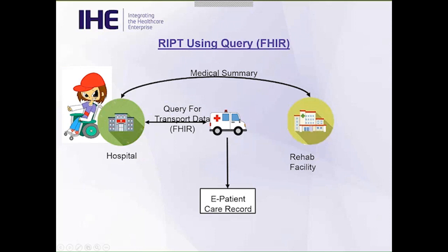With the FHIR approach, there may be information being shared between a rehab facility and a hospital, and a patient is being transported from the hospital to a rehab facility. The EMS or transport system may query for the transport data using HL7 FHIR, and that is the electronic patient clinical record they receive to take care of the patient during the transport activity.